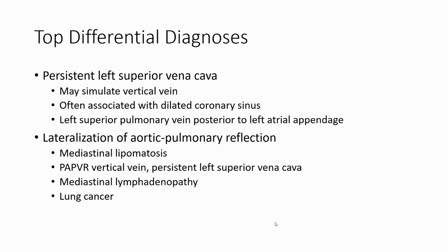Top differential diagnoses: persistent left superior vena cava may simulate vertical vein, often associated with dilated coronary sinus. Left superior pulmonary vein posterior to right atrial appendage. Lateralization of aortopulmonary window. Mediastinal lipomatosis, partial anomalous pulmonary venous return with a vertical vein, mediastinal lymphadenopathy, and lung cancer.